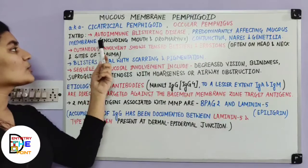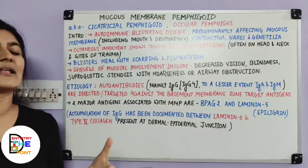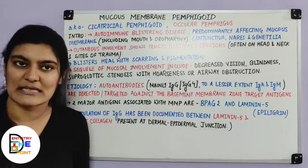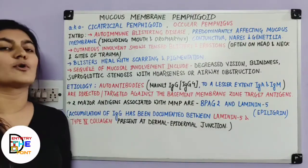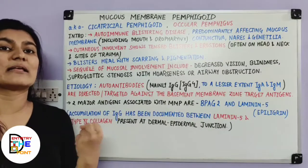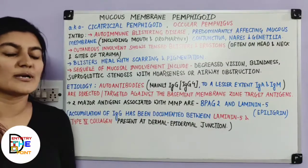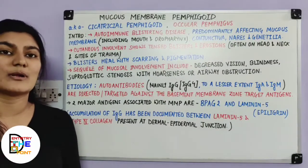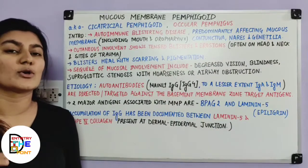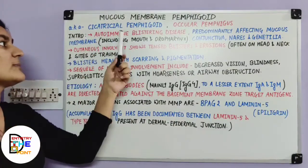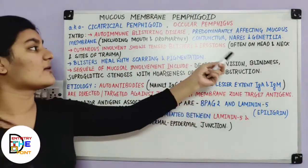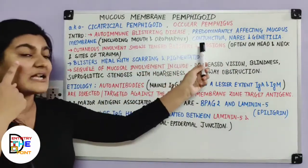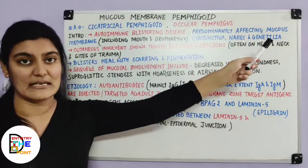It is an autoimmune blistering disease. As I said, pemphigus and pemphigoid are all a family of autoimmune blistering diseases. Autoimmunity is when the body starts killing your own healthy cells, resulting in blisters — vesicles and bullae, small fluid-filled eruptions on your skin. It predominantly affects the mucous membranes including the mouth, oropharynx, conjunctiva, nares, and genitalia.